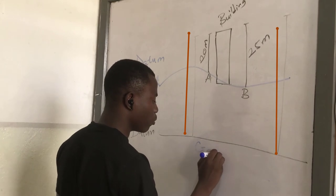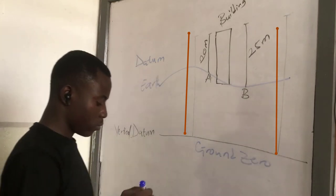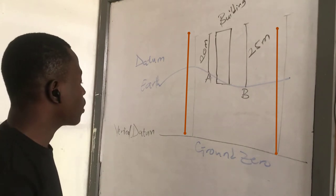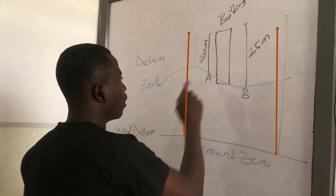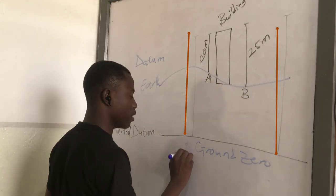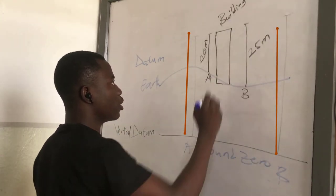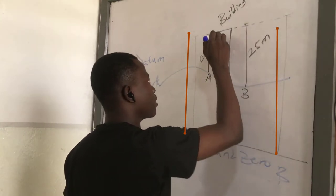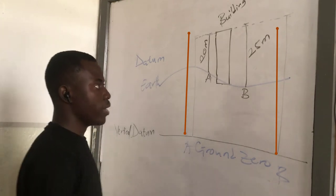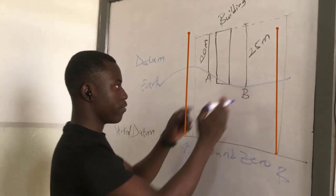This is our ground zero, which means that if student A and student B stand from these points, so let's say A and B, and then measure the height of the building, they should be getting the same heights or the same distances, because they started from the same ground zero.